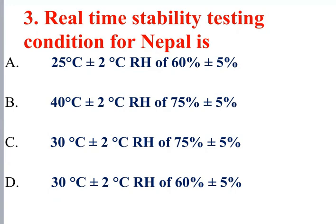Relative humidity for real-time conditions is 75 percent plus or minus 5 percent. For the accelerated stability study, the temperature is 40 degrees centigrade.